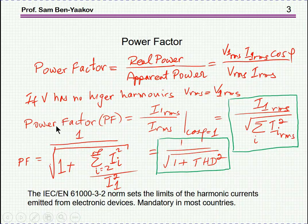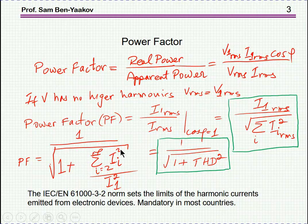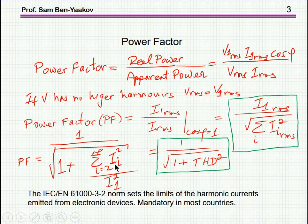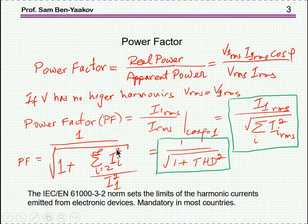Power factor is related to another important parameter, which is the total harmonic distortion (THD). THD is defined such that the square root of THD squared would be the sum of all the harmonic components of the current — except the first one — divided by the first harmonic. So this ratio tells us how much distortion we have in the current. If the current is not distorted, then this sum will be zero, so THD will be zero.